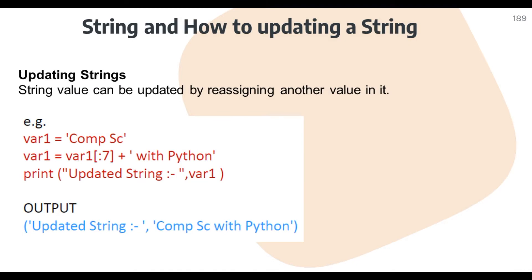The first thing we have to understand is: what is a string? A string is a collection of characters encoded in single quotes, double quotes, or triple quotes. It has index-based addressing which starts from 0 to n minus one, where n minus one is the last index position of the string.